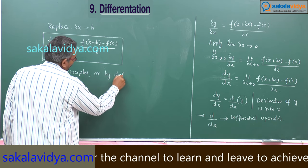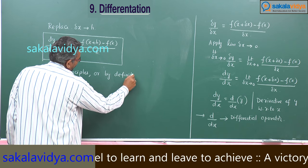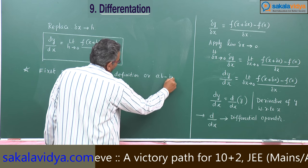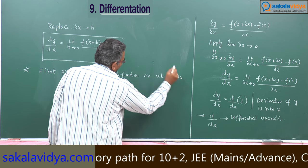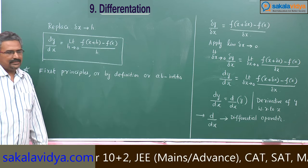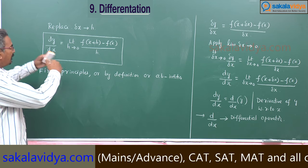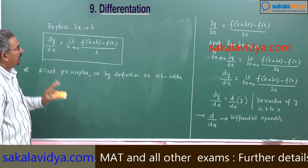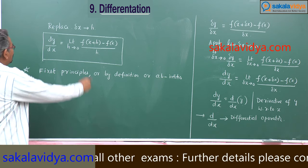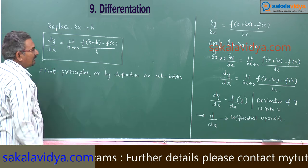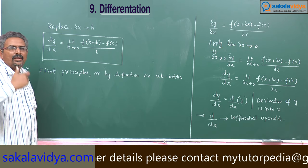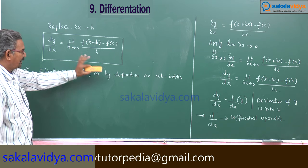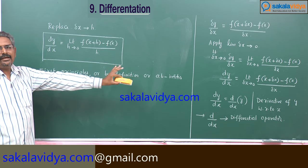We can also call it ab initio. Ab initio means from the beginning — that means this is the fundamental theorem for finding the derivatives of any function. Using this formula we can find out the differential coefficients of various functions. This is called first principles, by definition, or ab initio.